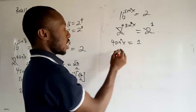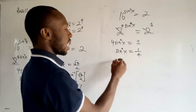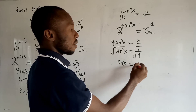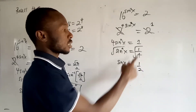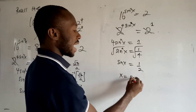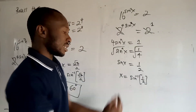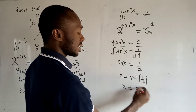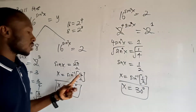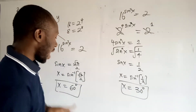Dividing both sides by 4, sin squared x equals 1 over 4. Taking the square root of both sides, sin x equals 1 over 2, since the square root of 1 is 1 and the square root of 4 is 2. Therefore x equals the inverse sine of 1 over 2, which gives x equals 30 degrees. You can verify this in the calculator: sin inverse of 1/2 gives 30 degrees, and sin inverse of root 3 over 2 gives 60 degrees.